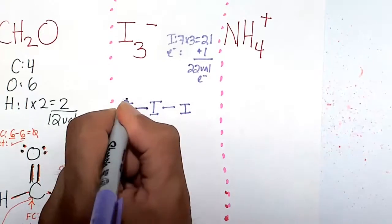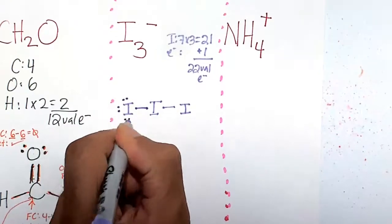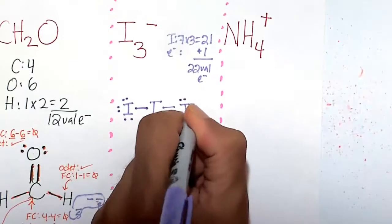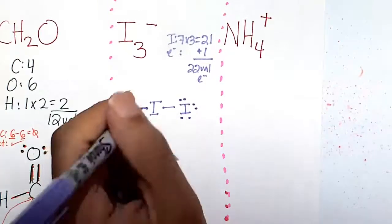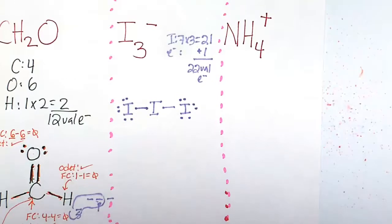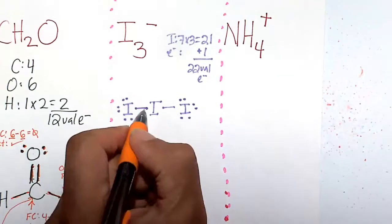So we got to do 22 here. So 1, 2, 3, 4, 5, 6, 7, 8, 9, 10, 11, 12, 13, 14. And then I'm going to put it back on the central atom. So let's count this again.